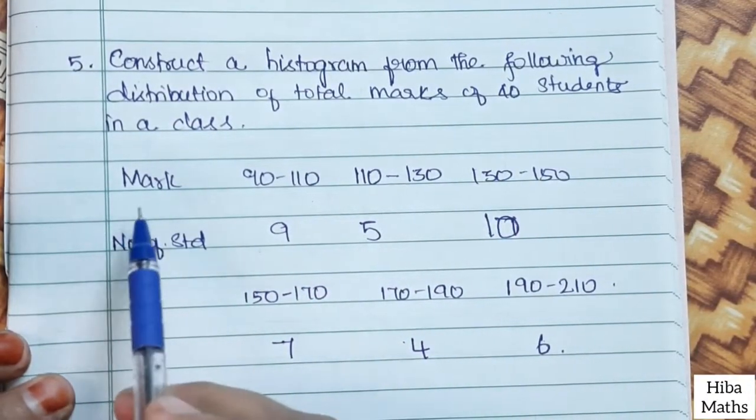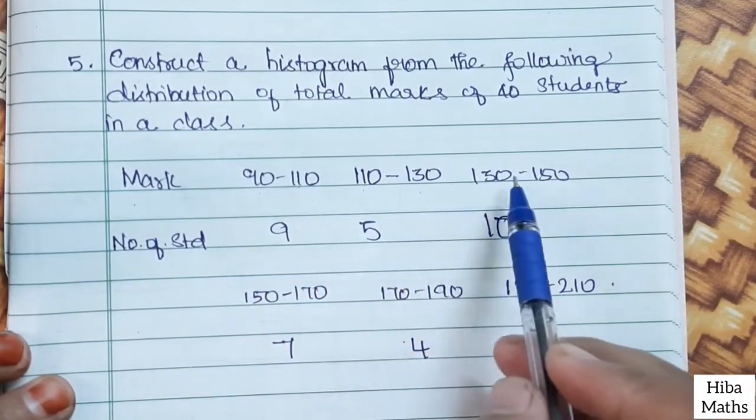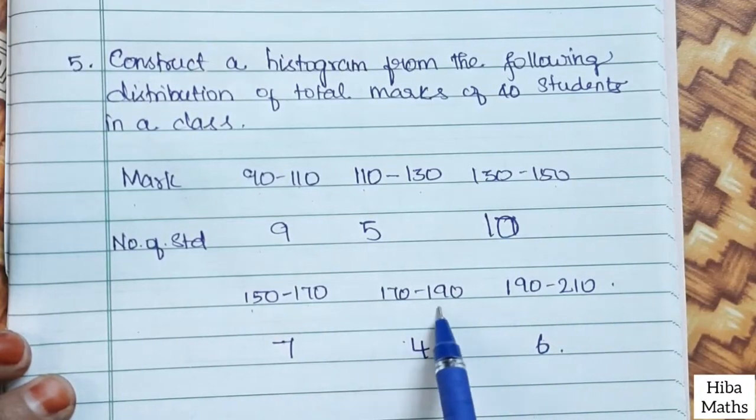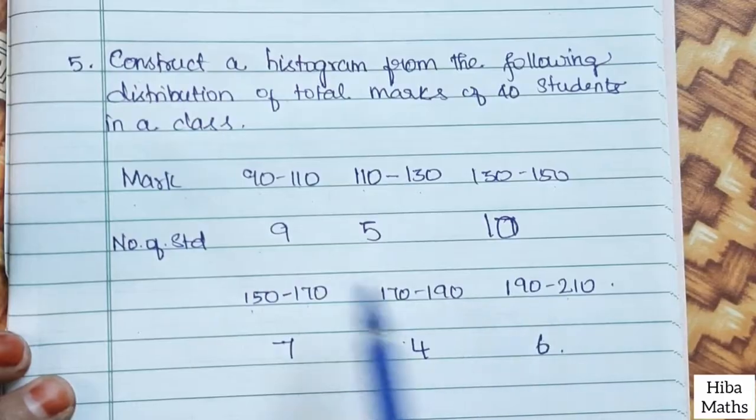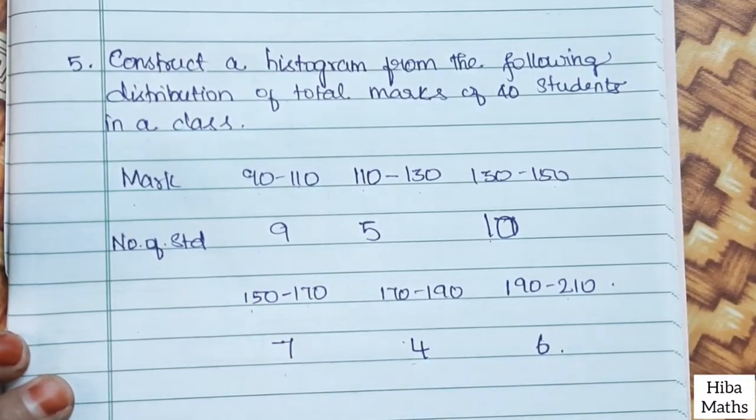If you have 40 students, marks are 90-110, 110-130, 130-150, 150-170, 170-190, 190-210. Number of students is 9, 5, 10, 7, 4, 6.